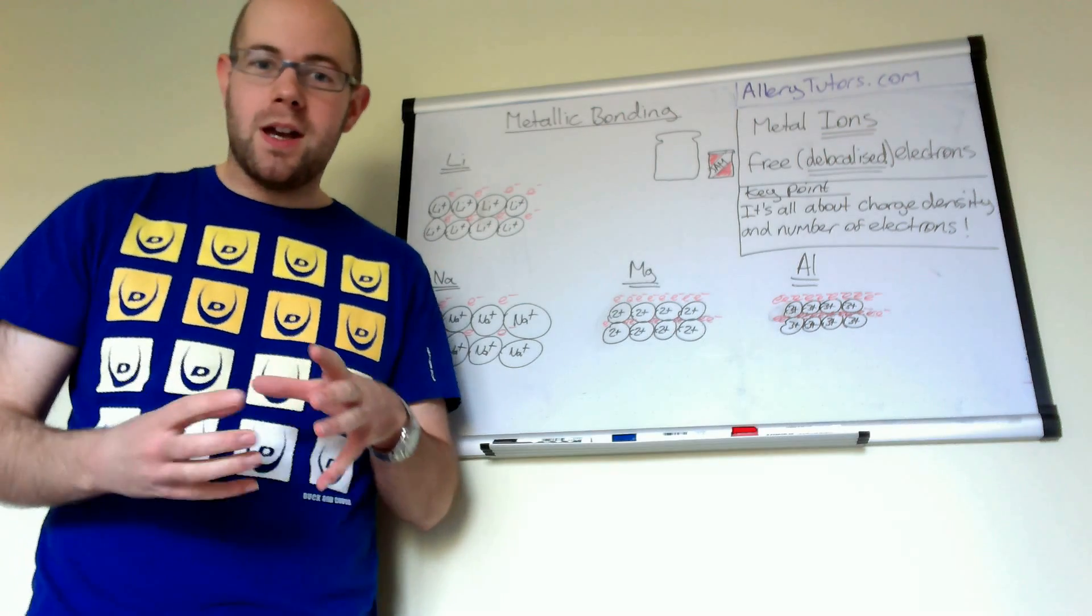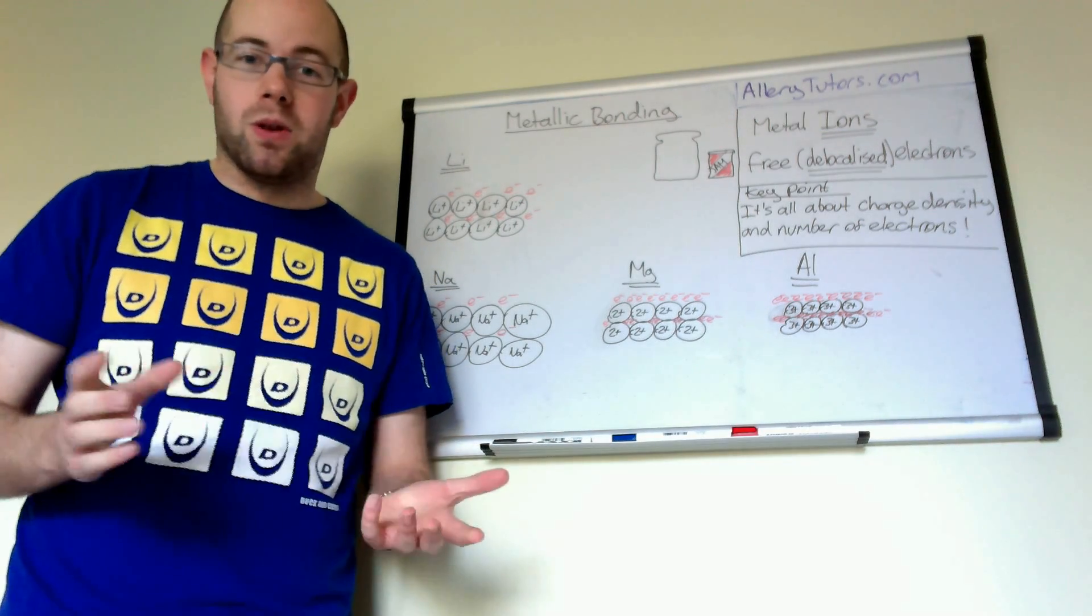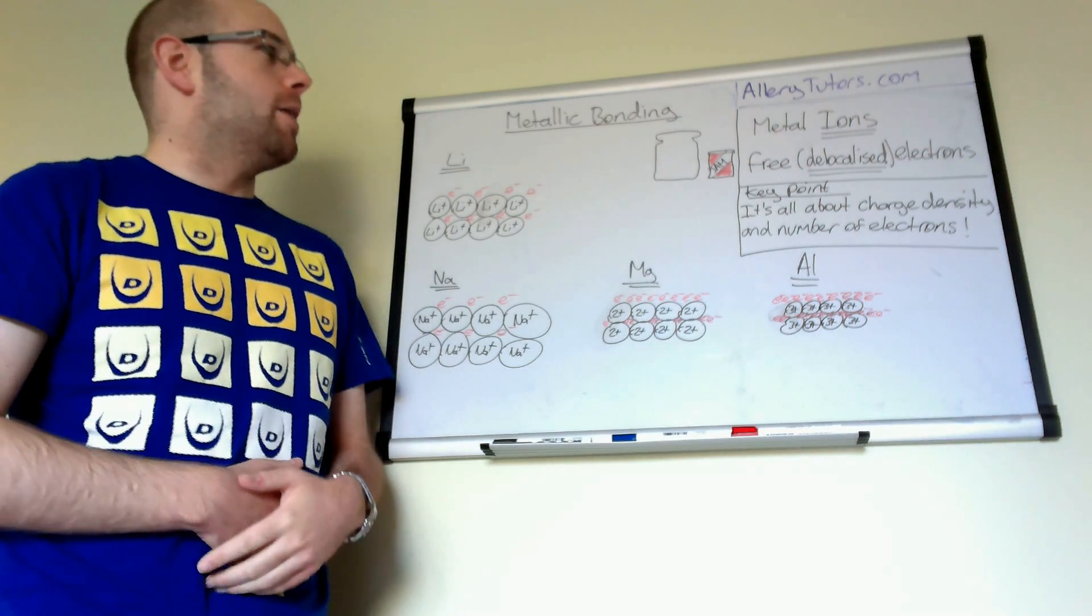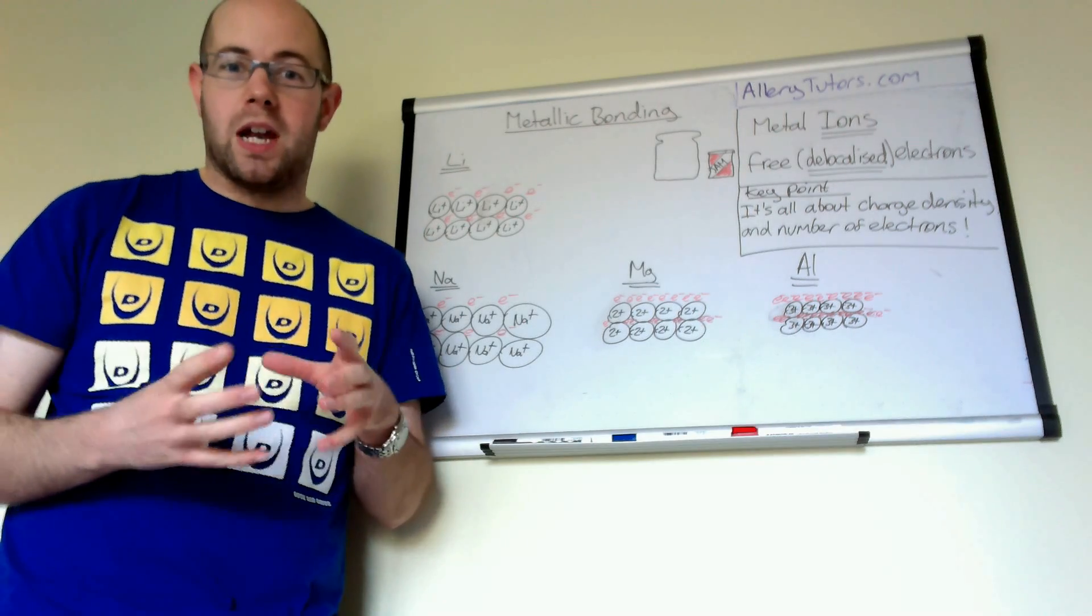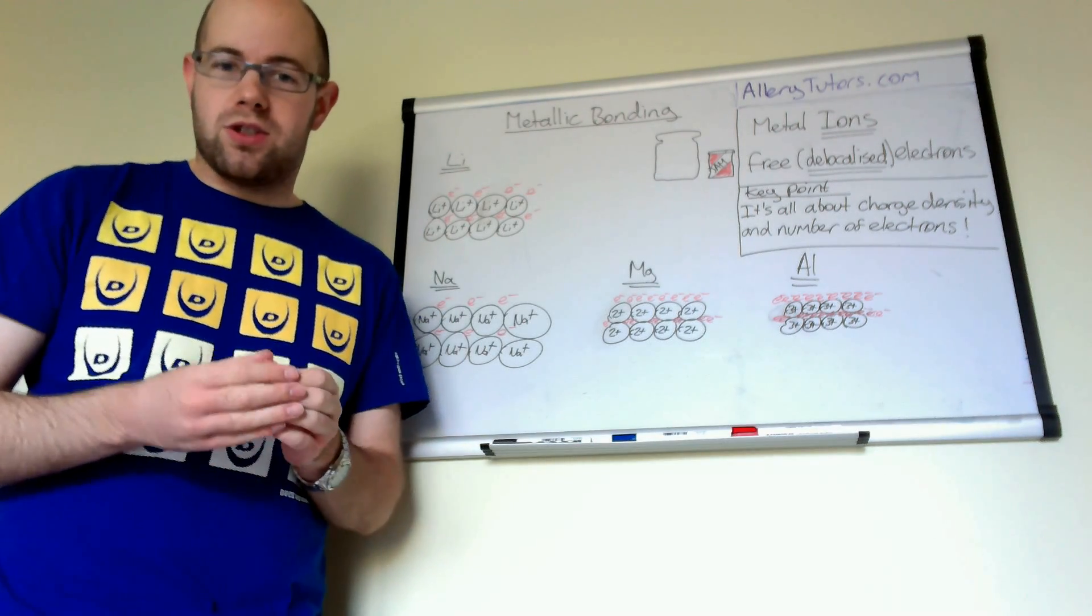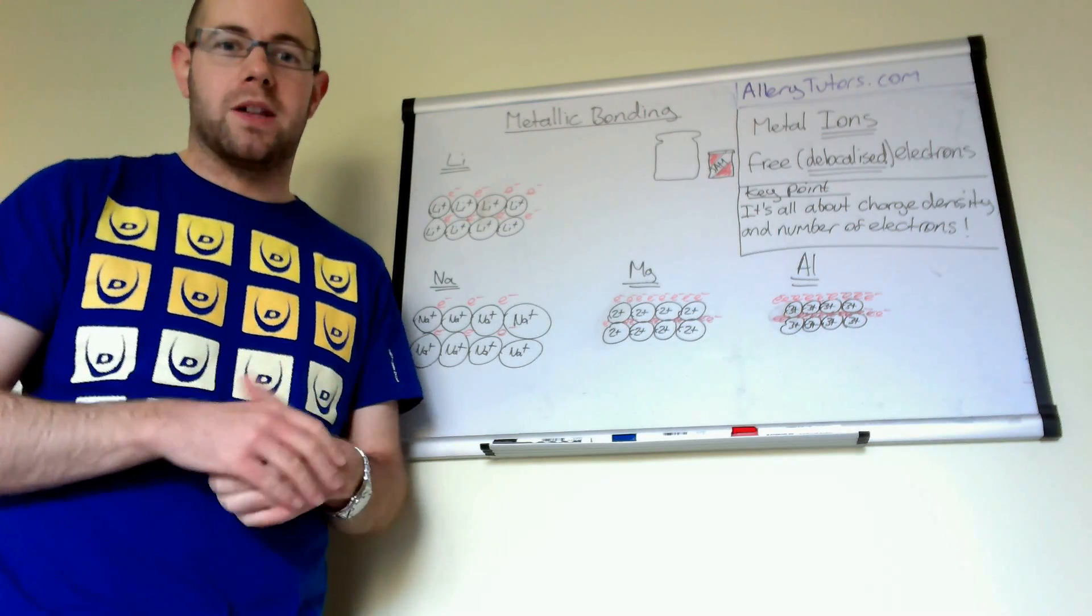Metallic bonding is one of the three main types of bond in chemistry, the other two being ionic and covalent. We're going to look at what the metallic bond is and how it alters the strengths of metals in the periodic table, and we're going to look at patterns and trends.